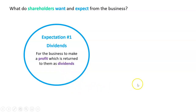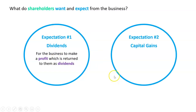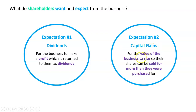Dividends are always a topic in the media — whether someone did or didn't get a dividend, or whether it was more or less than before. It's the owner's share of the profits. The other thing shareholders want, particularly for companies on the stock exchange, is what's called a capital gain — that is when the value of the business rises so the shares can be sold for more money than they were purchased for.